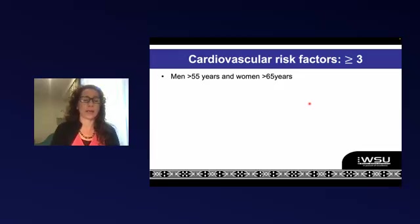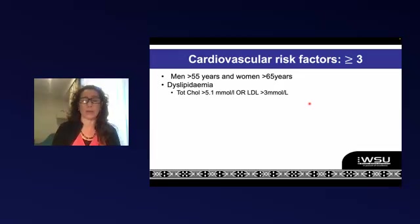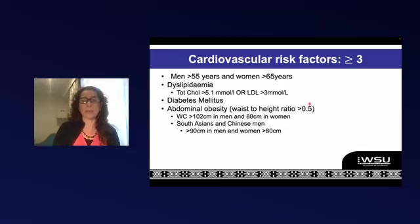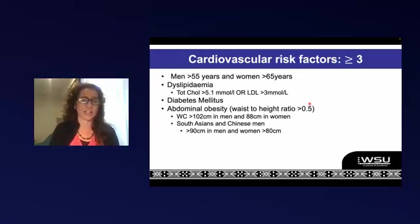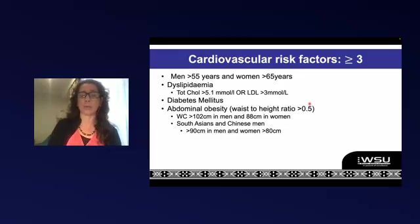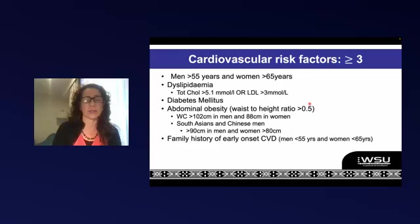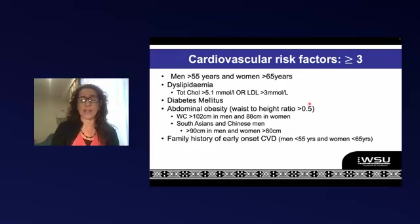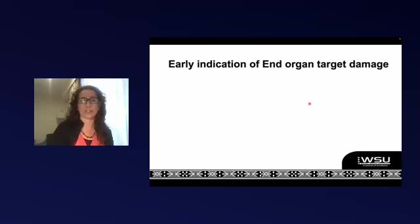Those risk factors include men over 55 years of age or women over 65, cholesterol over 5.1 or LDL over 3, diabetes, and abdominal obesity — with the EML cutoff at 102 cm for men and 88 cm for women, with lower cutoffs for South Asians and Chinese men. Family history is also important: a parent or first-degree sibling who has had a heart attack or stroke — men under 55 and women under 65 — and of course smoking.